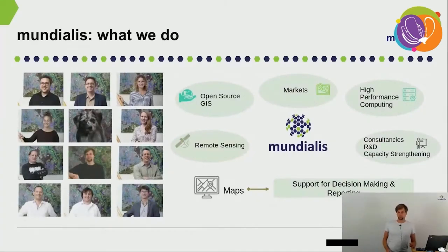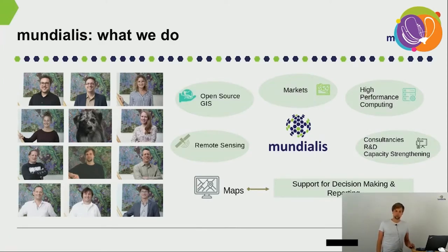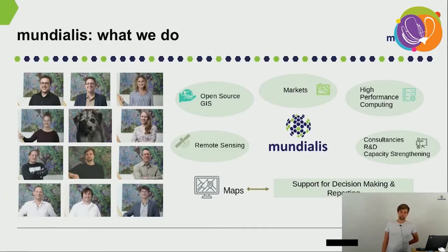We are mundialis, a remote sensing company based in Bonn, Germany. We focus on the analysis of large time series of Earth observation data using cloud environments, mostly focusing on free data such as data from the Copernicus Sentinel program. We are also committed to using exclusively free and open source software. With Marcus Metz and Marcus Netteba, we also have two GRASS GIS core developers in our team, and in our projects we regularly contribute to GRASS GIS development and the development of GRASS GIS add-ons.